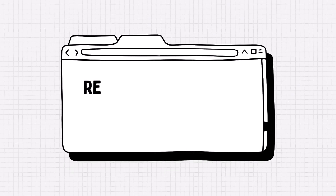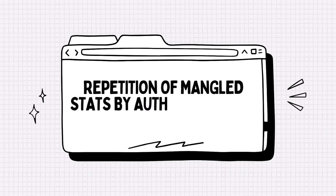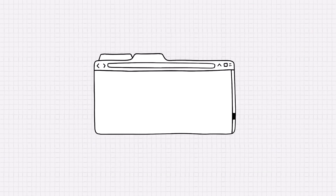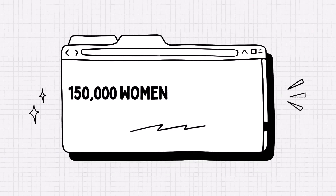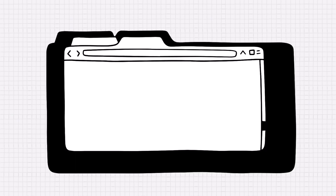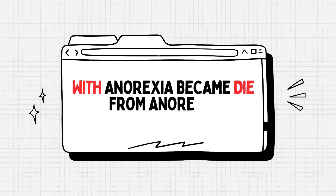People in positions of authority can give added credibility to the mangled stat. Through widespread repetition, a mangled stat can become part of the accepted facts about an issue that few think to question. For example, back in the 1990s, advocates seeking to raise awareness of eating disorders estimated that 150,000 American women were affected by anorexia, which could lead to death. Later advocates mangled this stat, saying that 150,000 women per year died from anorexia in the U.S.